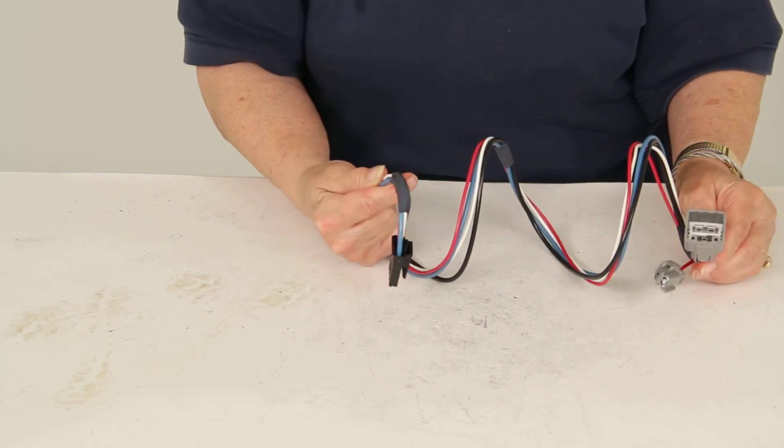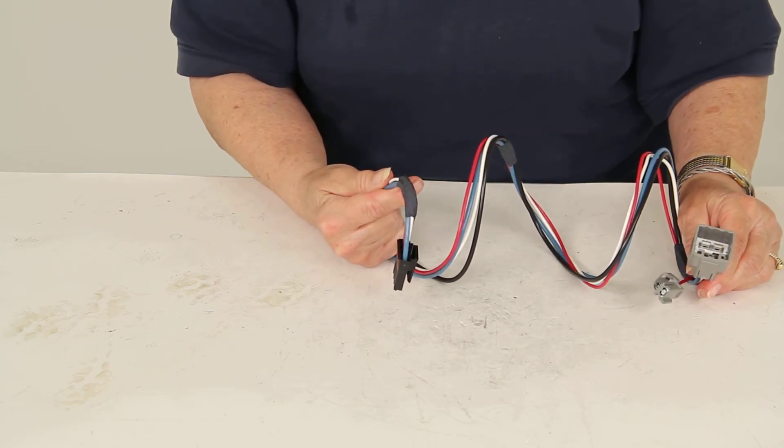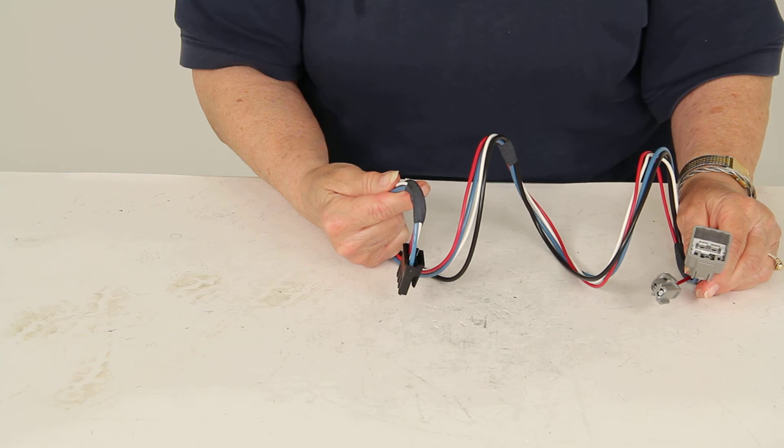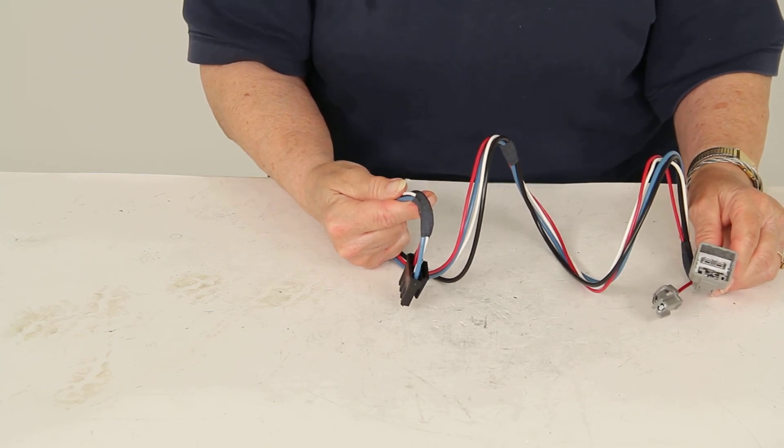And that's it for part number HM53055 from Hopkins, the plug-in simple brake control wiring adapter. Thank you.